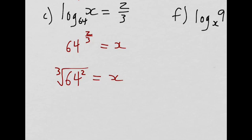64 squared is 4096, and we're cube rooting that. And I just want to see really quick if 4096 is a perfect cube. Yes, it is. It is 16. So x equals 16. Good.